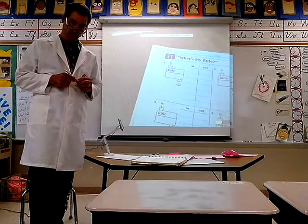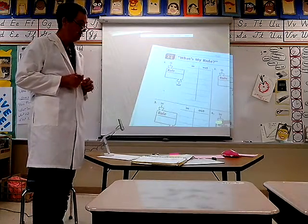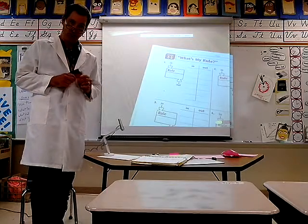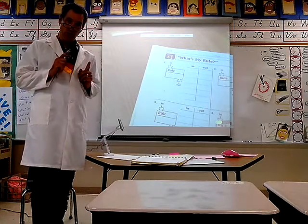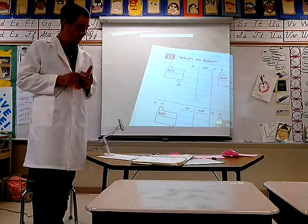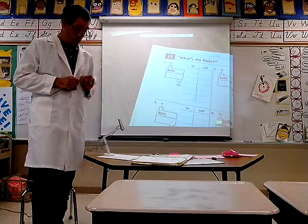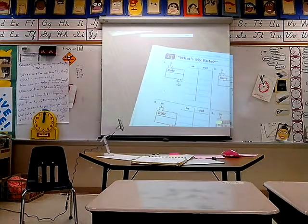I am here today to review the variation of what's my rule using function machines as you do your mathematics for the next days. The first variation, the first type of function machine you will come across, and maybe the most basic and the most familiar, is where we know the input, but we do not know the output, and we also know the rule. This is the first type of function machine.